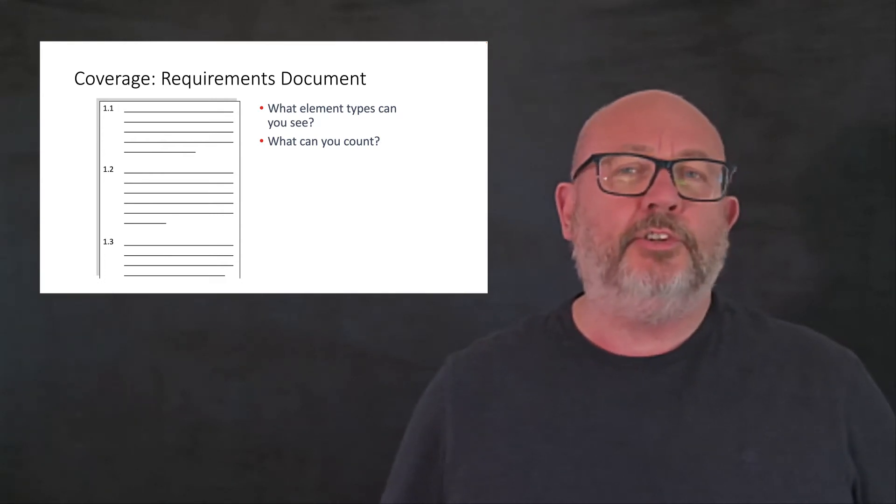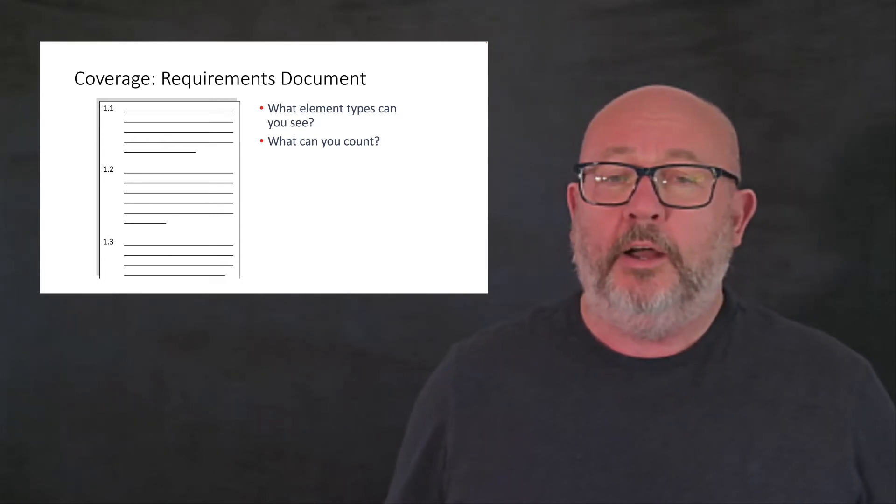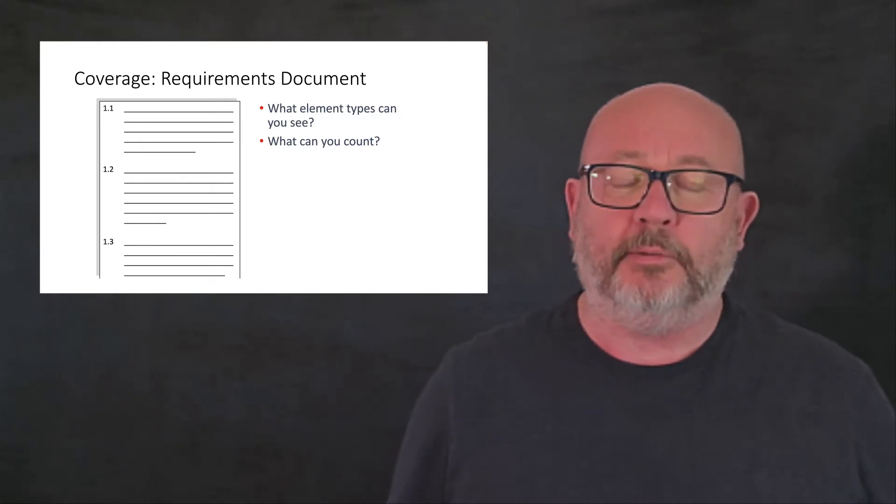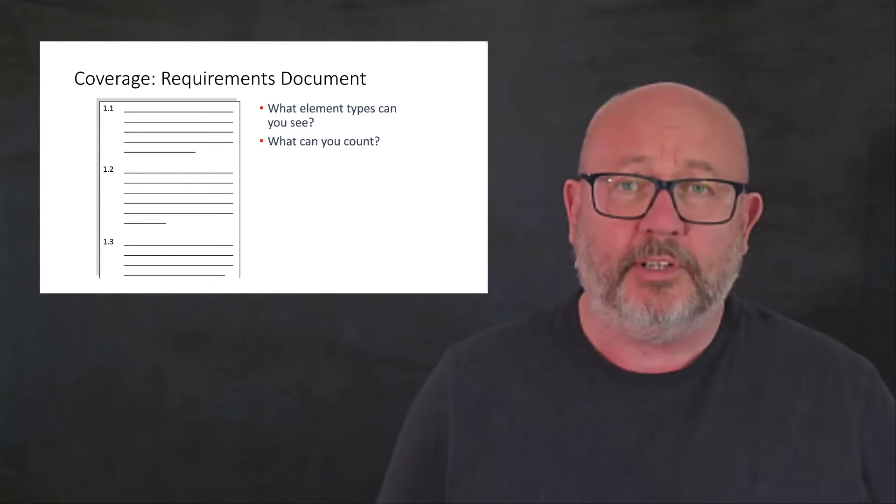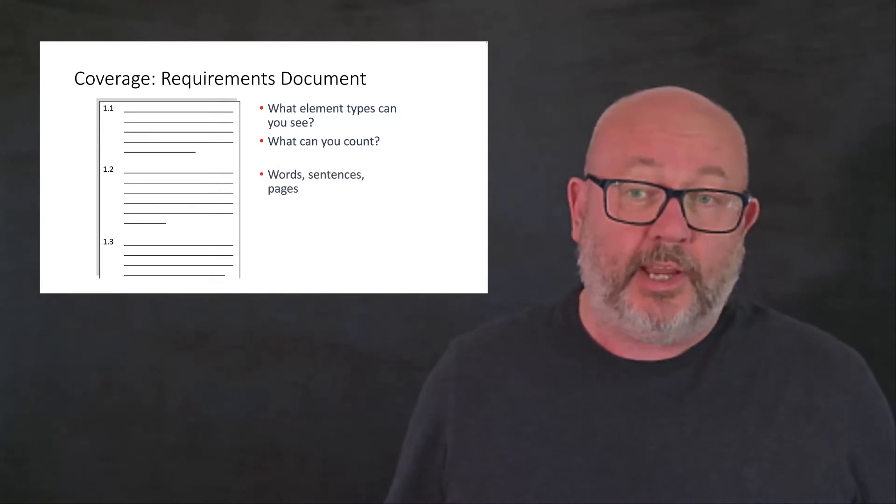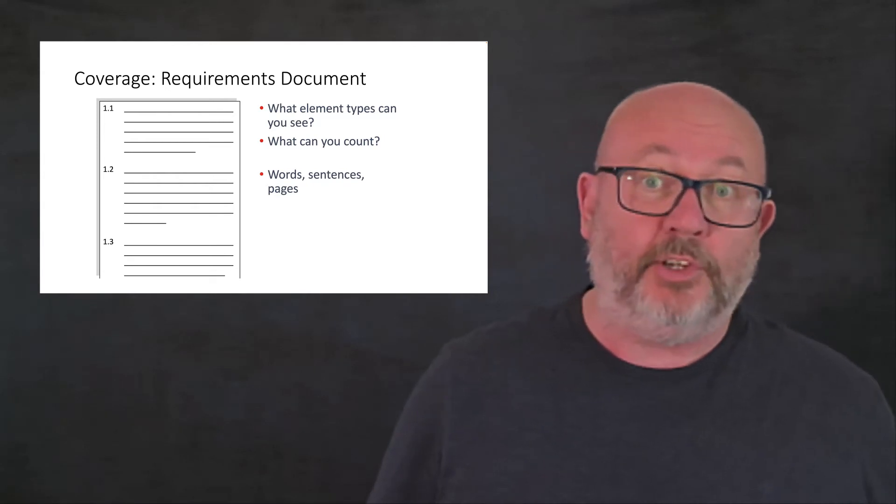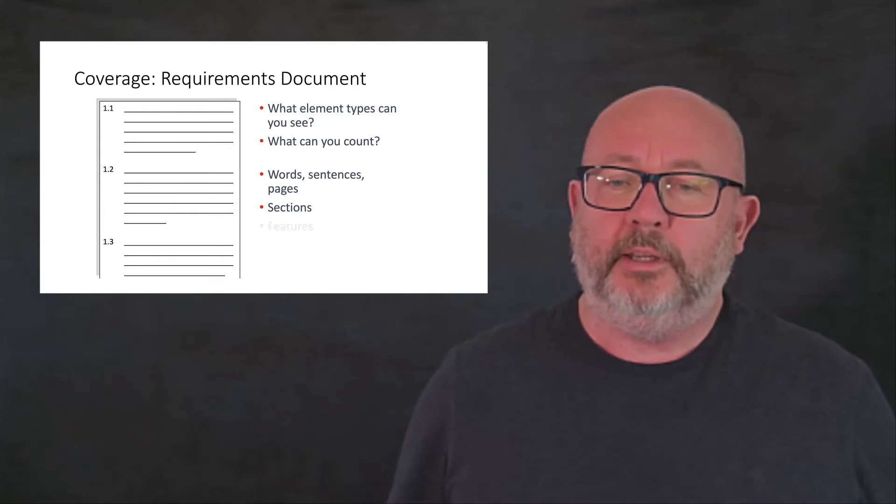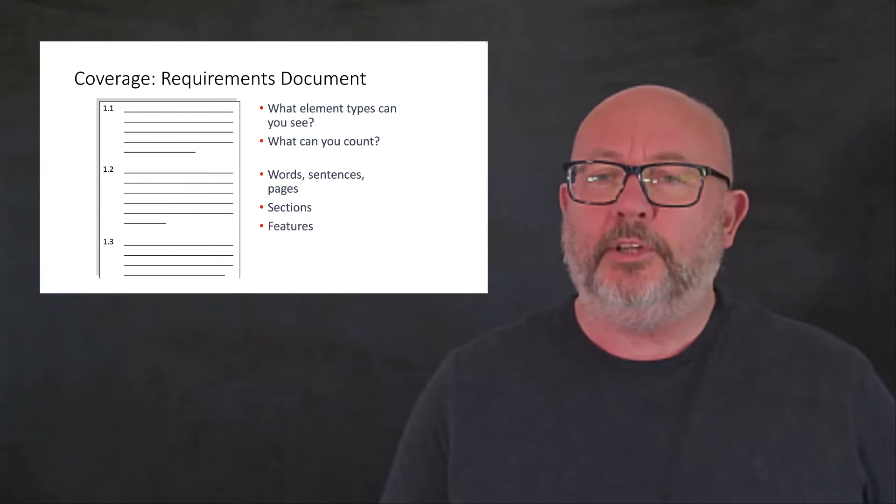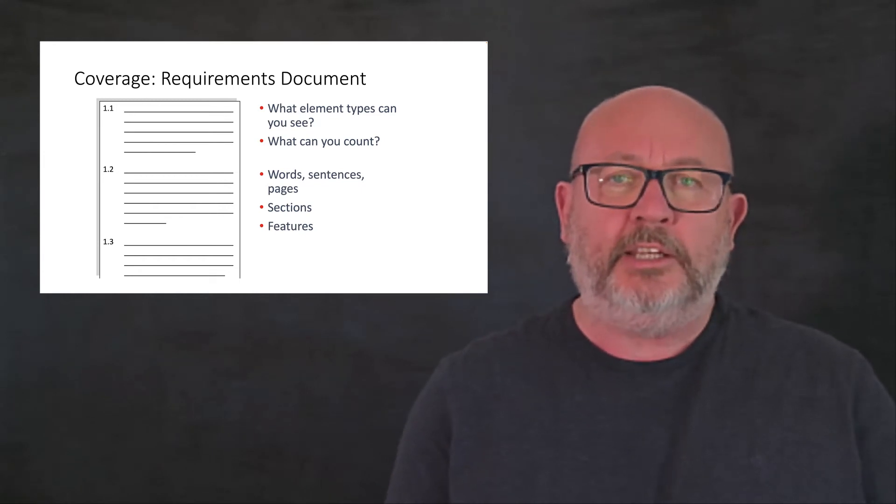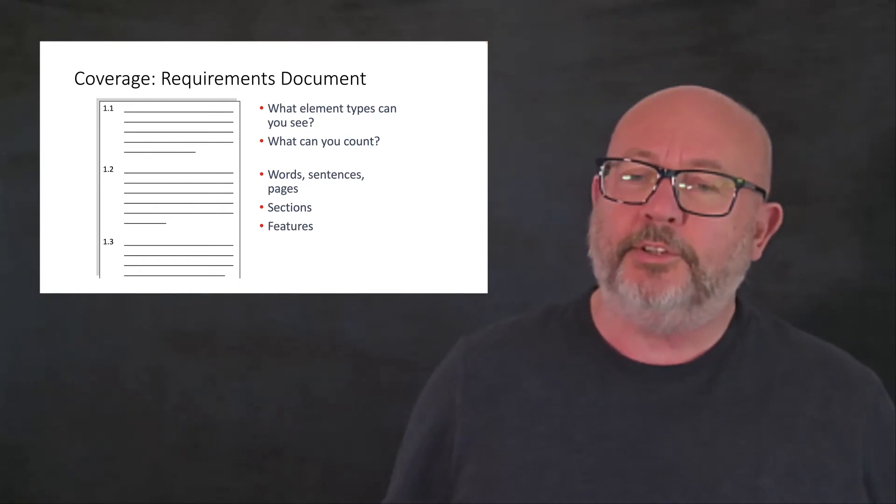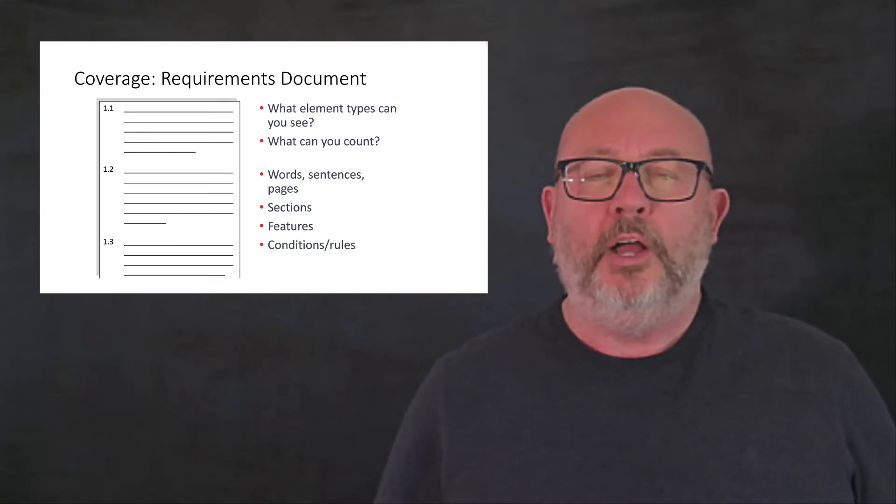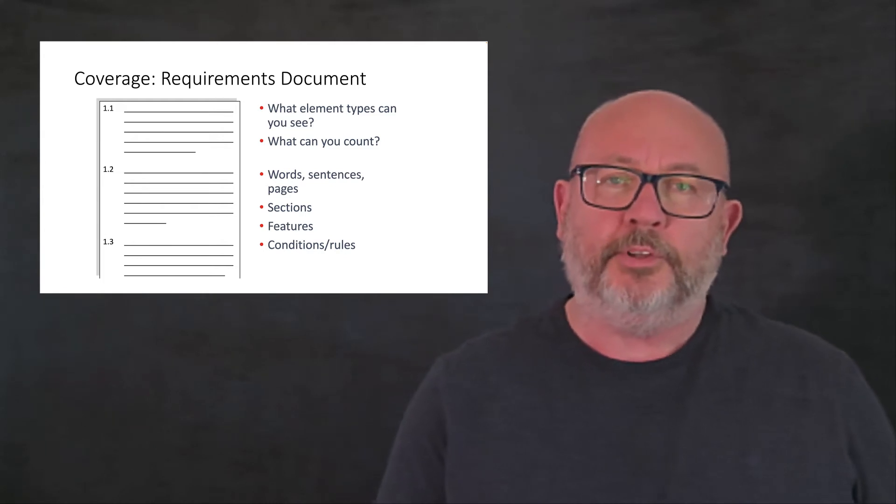Given a requirements document, if I asked you in a class what element types can you see, what things can you see, what entities can you see in a requirements document, what could you count? You might say, well, I can count words, I can count sentences, I can count pages, sure. Maybe there are sections at 1.1, 1.2 and so on. I could count features if I could have a rule that says this is how a feature is defined in this requirements document. And I might look within the context of a feature for conditions or specific business rules that the software must obey.